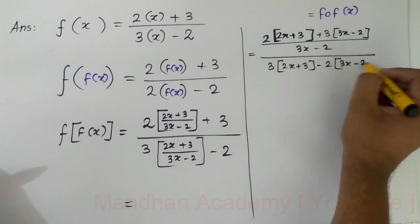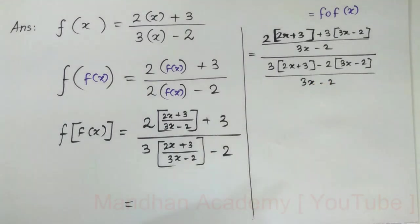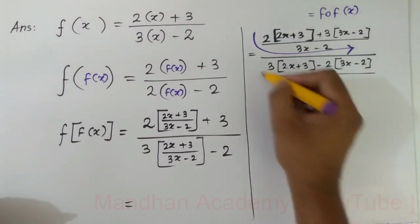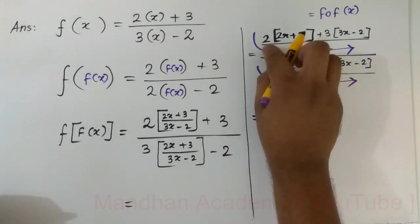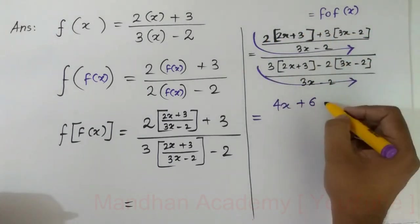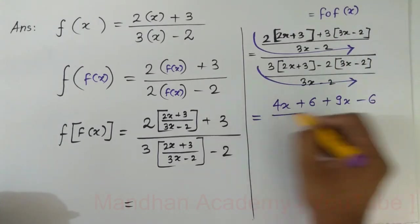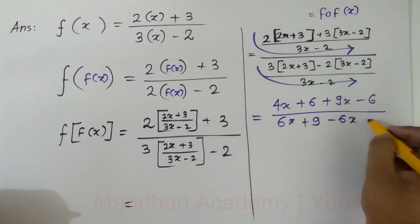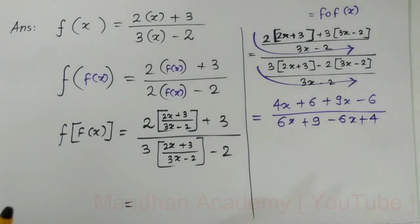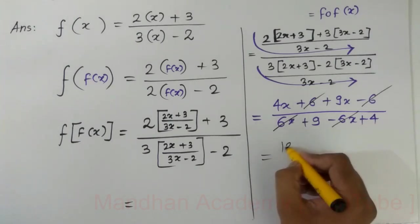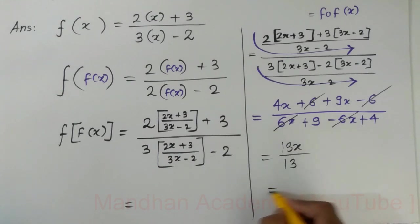I have the same denominator. Both are getting cancelled. Now I am left with 2 times 2, that is 4x, 2 times 3 is 6, plus 9x minus 6x plus 4. The 4x minus 6, 6x getting cancelled, minus 6x plus 6x getting cancelled. I am left with 13x over 13, so my final answer is x.